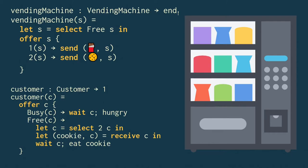Now, the customer offers two behaviors based on whether the vending machine is free or busy. So if it's busy, then the customer closes the connection and goes away hungry. Otherwise, it selects button two, receives a cookie, closes the connection, and then eats the cookie.